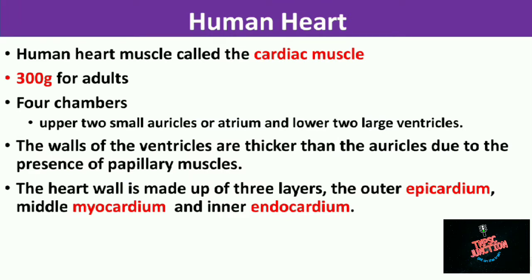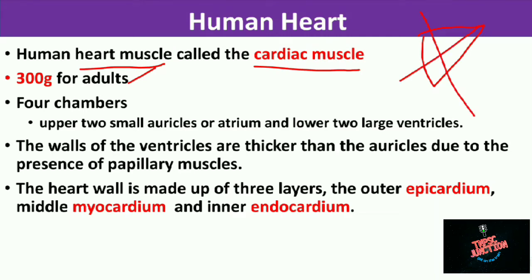First of all, the human heart — if you are aware of the basic information, this is very useful to you. The heart muscle is called cardiac muscle. The average adult heart weight is approximately 300 grams. The heart has 4 chambers: left atrium, right atrium, left ventricle, and right ventricle. These 4 chambers are split.